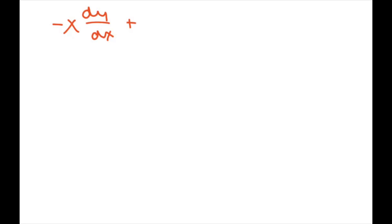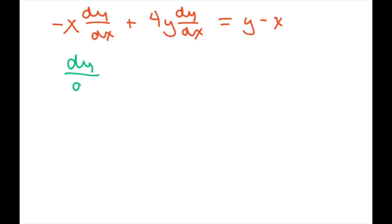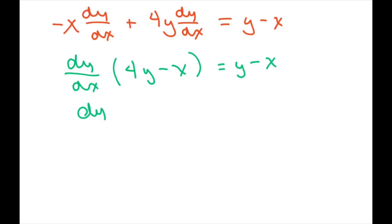So we have negative x dy/dx plus 4y dy/dx equals y minus x. Factor out dy/dx and we get dy/dx times (4y minus x) equals y minus x. Dividing both sides, dy/dx equals (y minus x) divided by (4y minus x). On the AB examination, this is worth two points: one for differentiation and one for simplifying correctly.